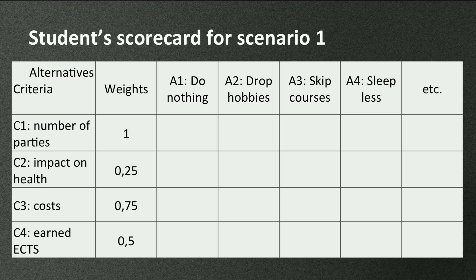When she started filling in the scorecard, it became immediately clear that doing nothing was no option, because then she would have to quit studying because of the negative study advice. By looking at the consequences of several alternatives — like dropping one of her hobbies or sports, skipping some of the courses, taking a less active role on a committee, sleeping less, and many others — the student was able to come to a conclusion about the set of actions to improve the study results without harming her private life too much.